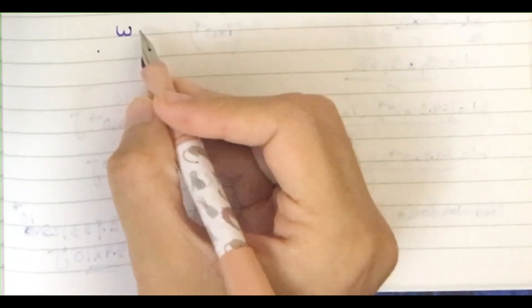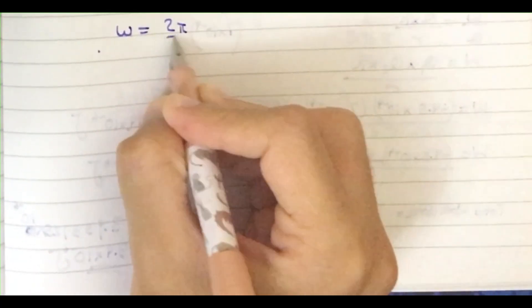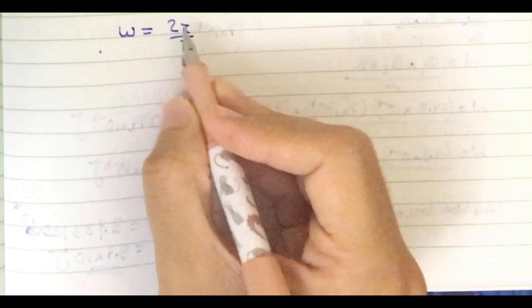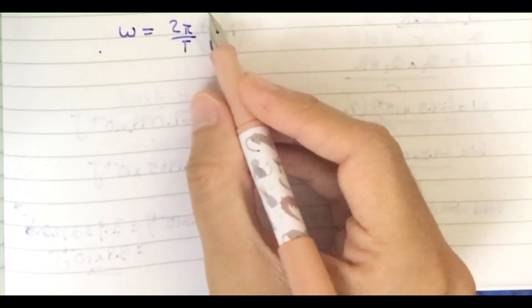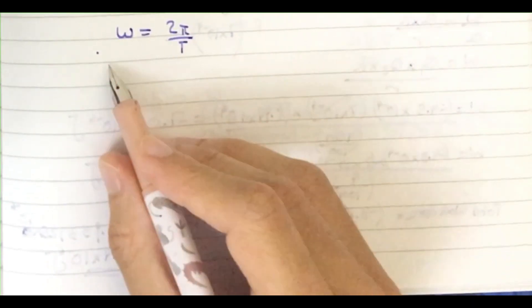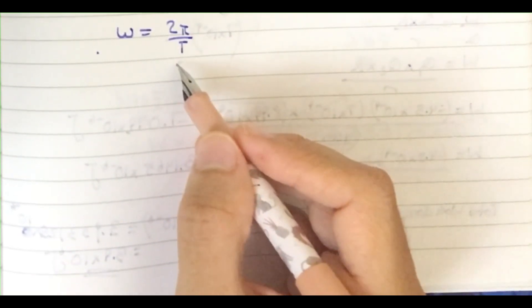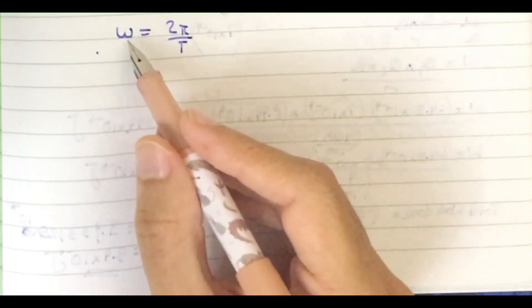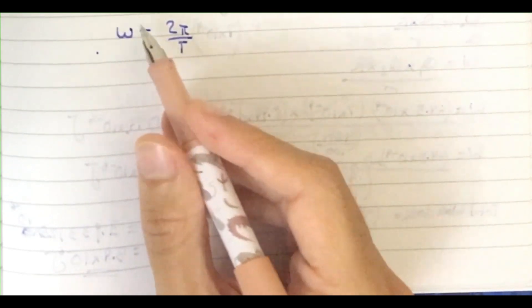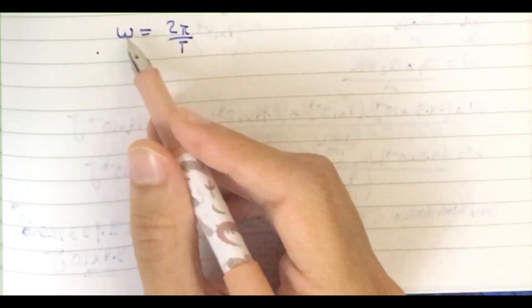We're going to use the formula ω = 2π/T. Two π basically represents 360 degrees, that's why I use 2π, and then you divide by T. We're not given the angular velocity ω, so I have to convert it.